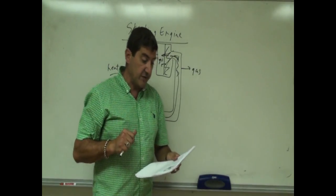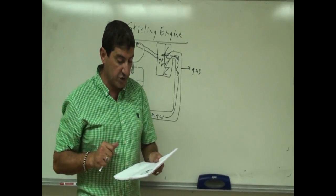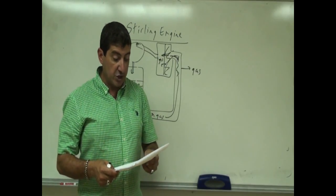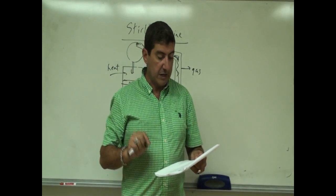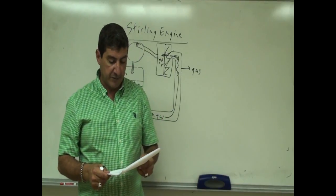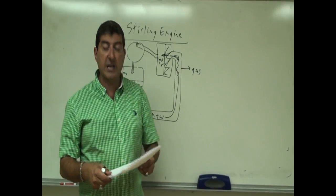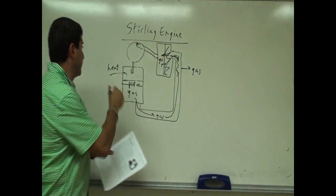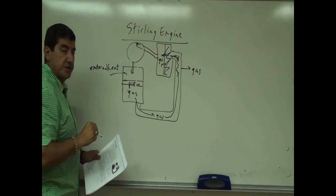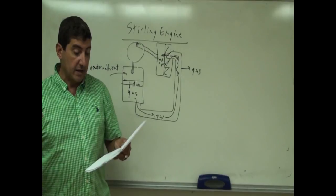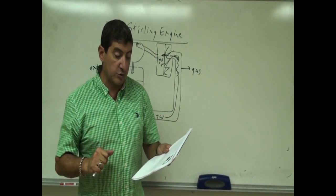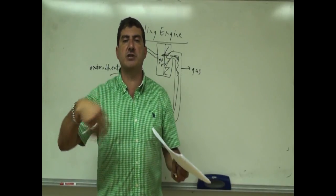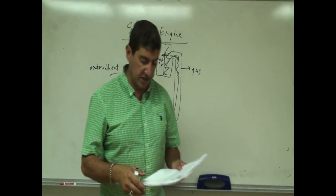Originally conceived in 1816 as an industrial prime mover to rival the steam engine, its practical use was largely confined to low-power domestic applications for over a century. Stirling engines have a high efficiency compared to steam engines, being able to reach 50% efficiency — that's really, really high. They are also capable of quiet operation and can use almost any heat source. The heat energy source is generated external to the Stirling Engine, rather than by internal combustion as with the auto cycle or diesel cycle. So the auto or diesel cycle uses internal combustion to generate heat, whereas this one uses an external heat source.